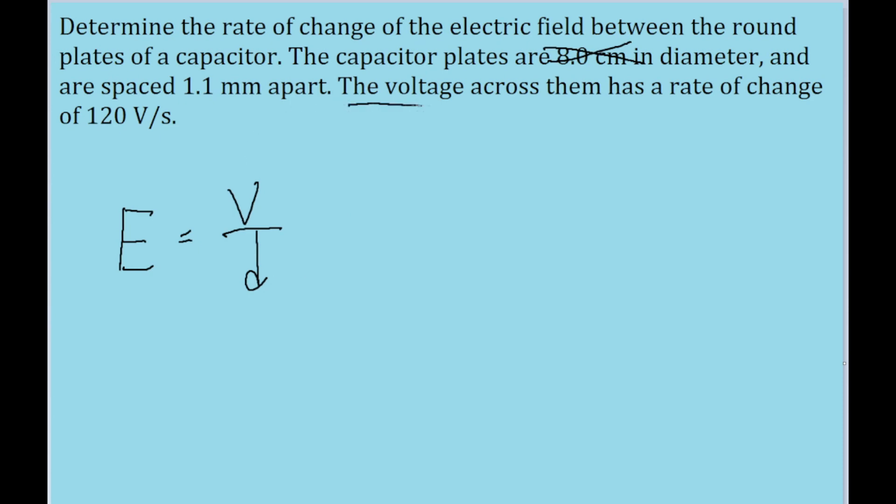Now, we're given the voltage across them, but only as a rate of change. We don't know what the voltage is at any point in time, but we do know how much it's changing. That's actually useful to us because we only want to find the rate of change of the electric field as well. We're only looking for two rates of change here.